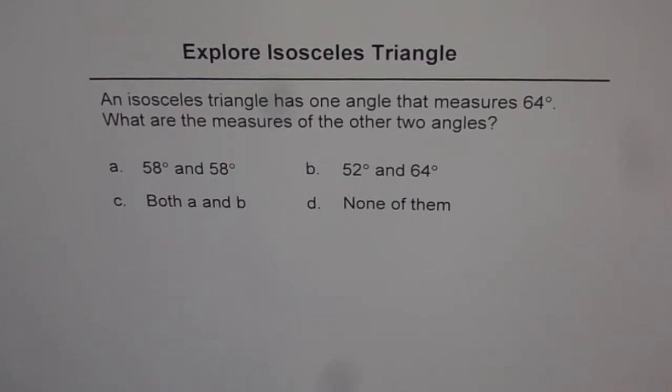We are given four choices. The other two angles could be 58 and 58, or could be 52 and 64, both A and B, or none of them.